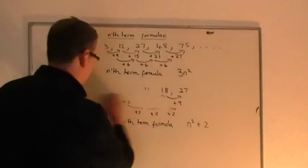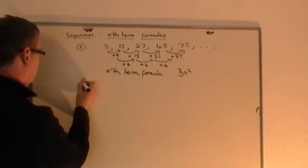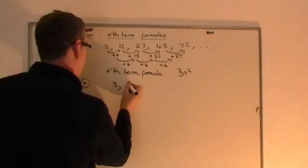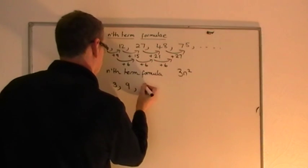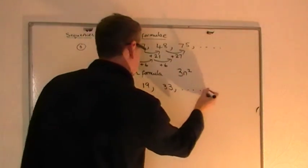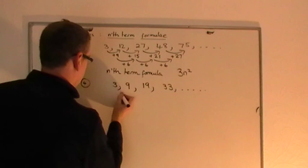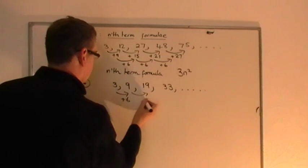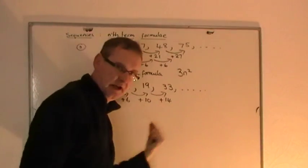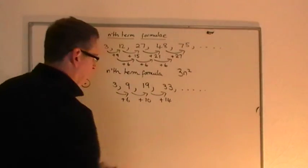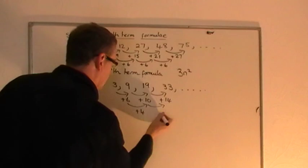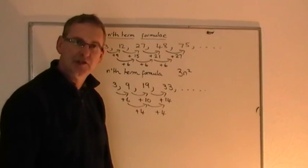I'll do one more to demonstrate. For number 4: 3, 9, 19, 33, and so on — I'll find the nth term formula. First differences: add 6, then add 10, then add 14. They're not the same, so it's not the linear type from the previous video. Looking at the second differences: plus 4, plus 4 — they are the same.